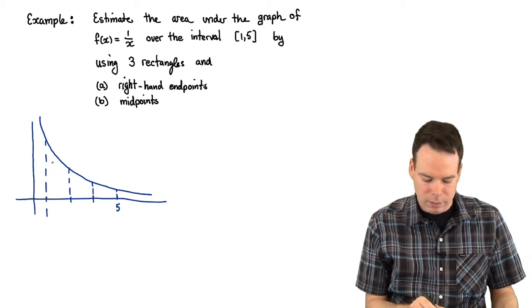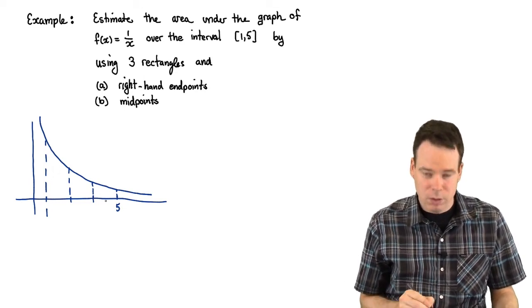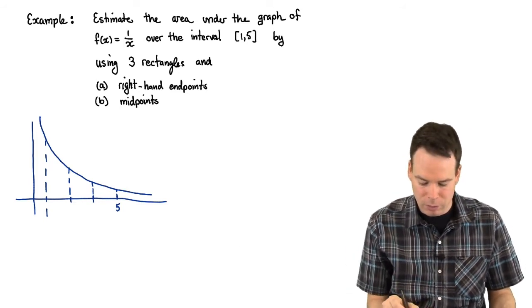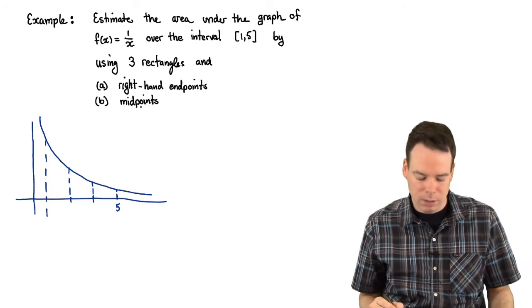What we'd like to do is estimate the area of each of these subintervals by using a rectangle. The question is how do we cap it? We're going to cap it either using the right-hand endpoints or by part b using midpoints.